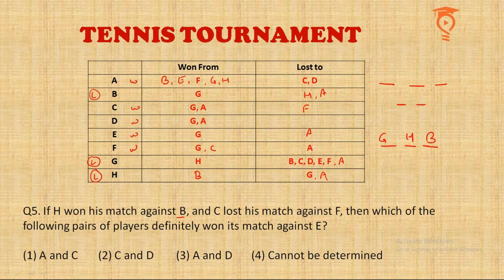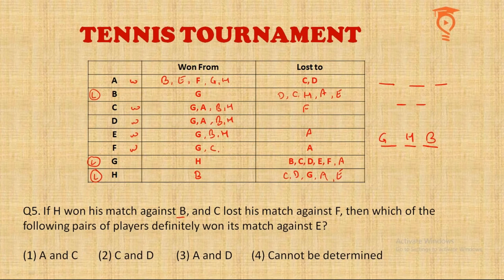B is a loser — B has won one match, so B accounts for six losses. C also must have won one from G, B, H. D also wins from B and H. E will win from B and H. F is also one of the winners, so F also must have won from B and H. We've accounted for the losers having six losses each, and the winners accumulating their wins accordingly.